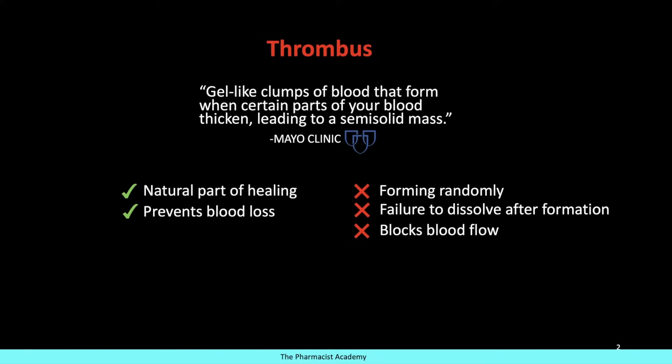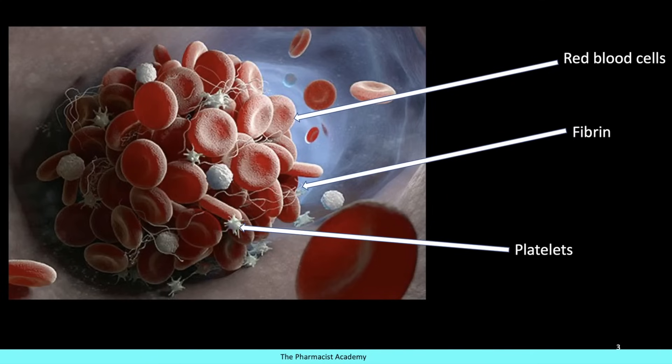The problem is that sometimes, if you have underlying conditions or due to certain things, clots may start forming randomly in our bodies, in our bloodstream. In this case, it forms and then there is failure to dissolve the clot after formation, which your body is usually pretty good at. Your body maintains that homeostasis with forming clots and also dissolving them after. When this happens randomly, it may block the blood flow.